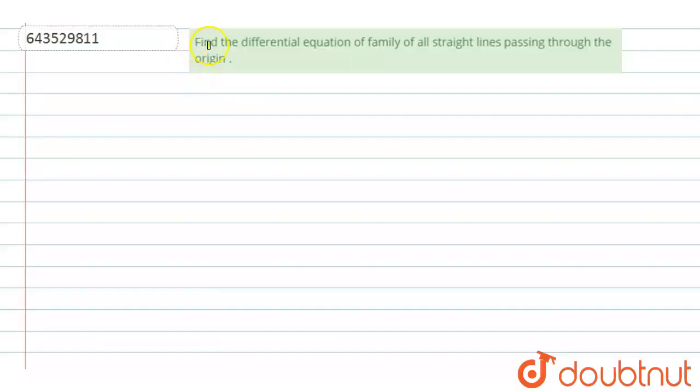The question says that find the differential equation of family of all straight lines passing through the origin.